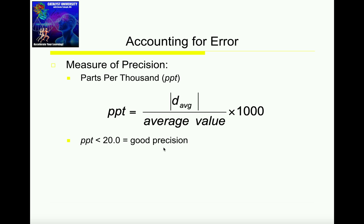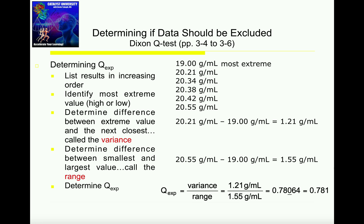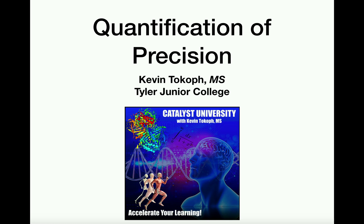In the next video, as I mentioned at the start, we're going to do a Dixon Q test, which is going to allow us to determine if we have imprecise data and if we can actually throw out the imprecise data point. Sometimes we can actually discard one of the data points to make our data a little more sound. This test is going to allow us to determine that. So join us in the next video when we cover that. Please make sure to like this video and subscribe to my channel for future videos and notifications. Thank you.